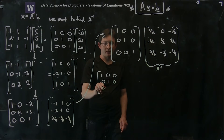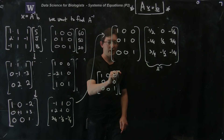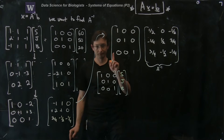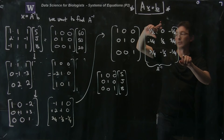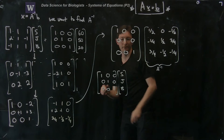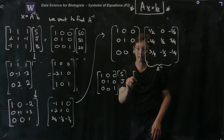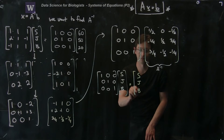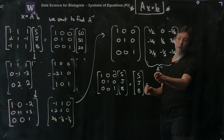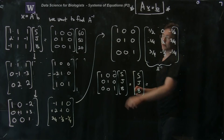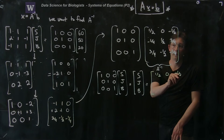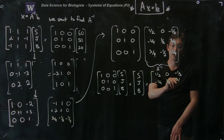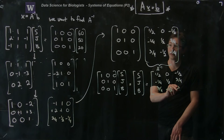If I take this identity matrix on the left times Sally, John, and Bob, it should equal A inverse times my B vector, which is 60, 50, 20. So A inverse is: row 1 — one-half, 0, minus one-half; row 2 — minus one-quarter, one-half, three-quarters; row 3 — three-quarters, minus one-half, minus one-quarter.